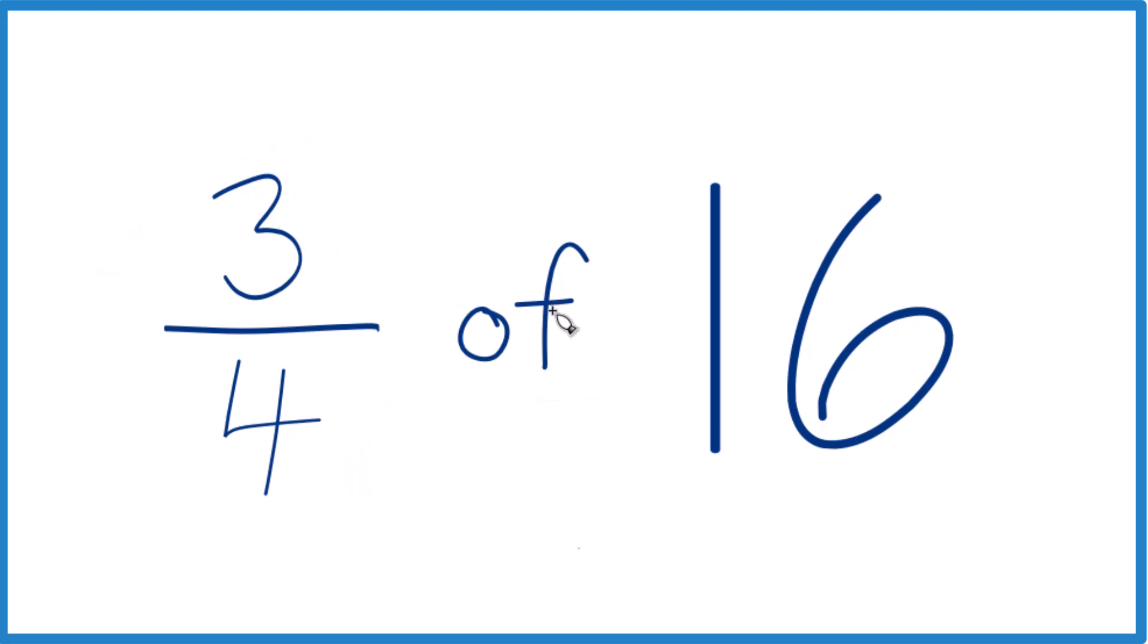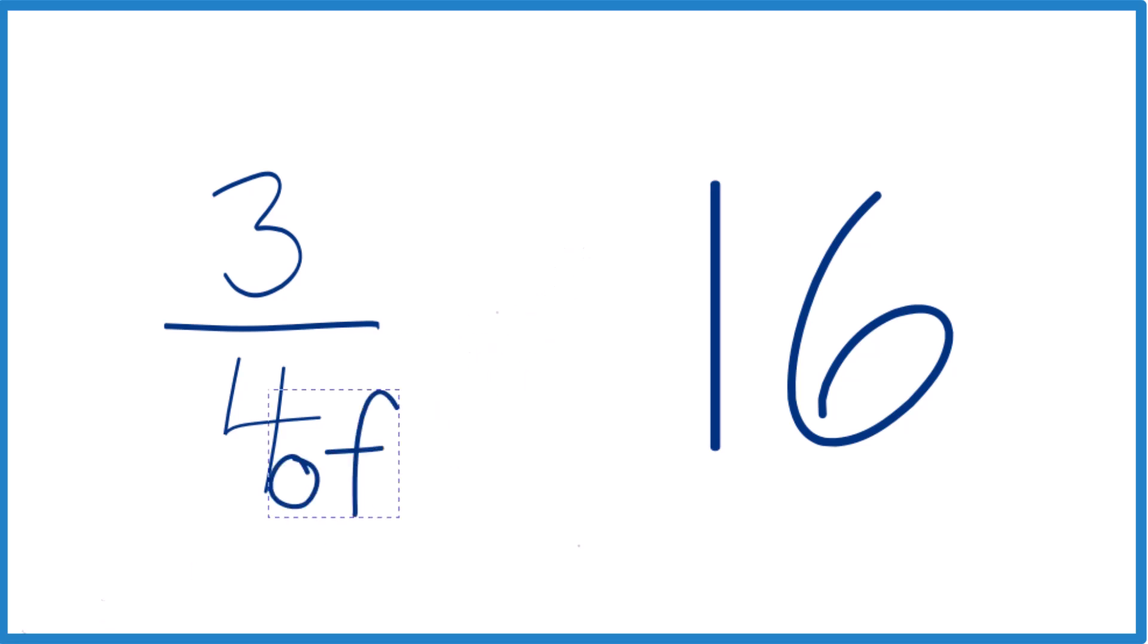So when we have three-fourths of, or we have a fraction of something, we can take that of and think of it as multiplication. So it's three-fourths times 16.